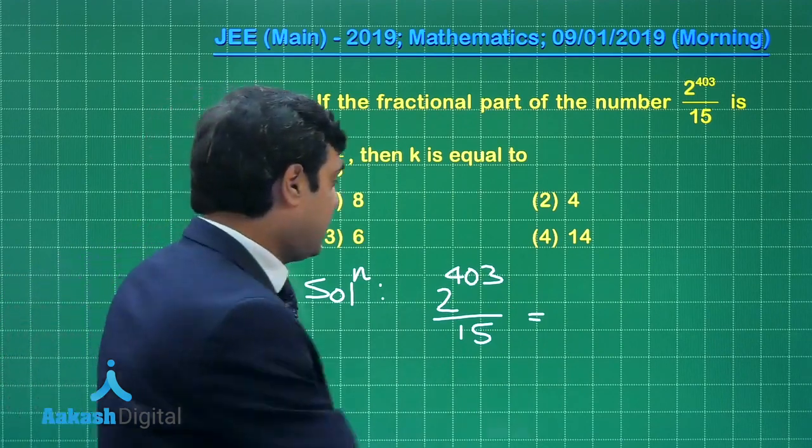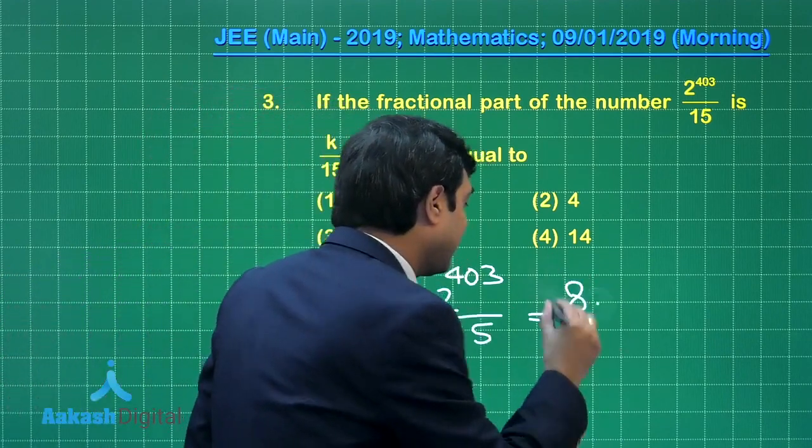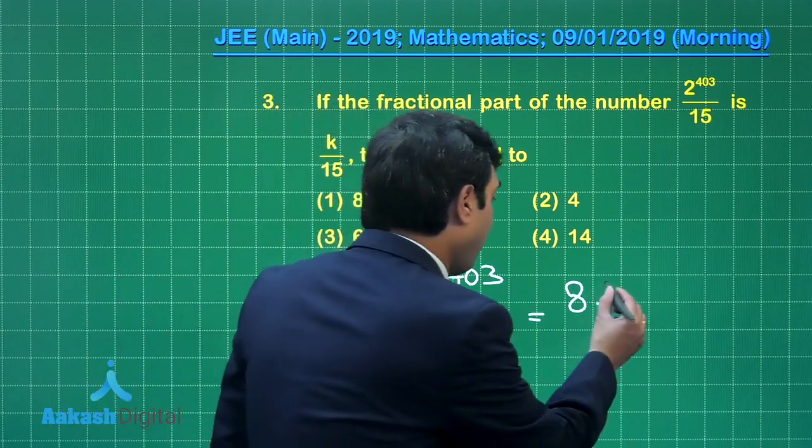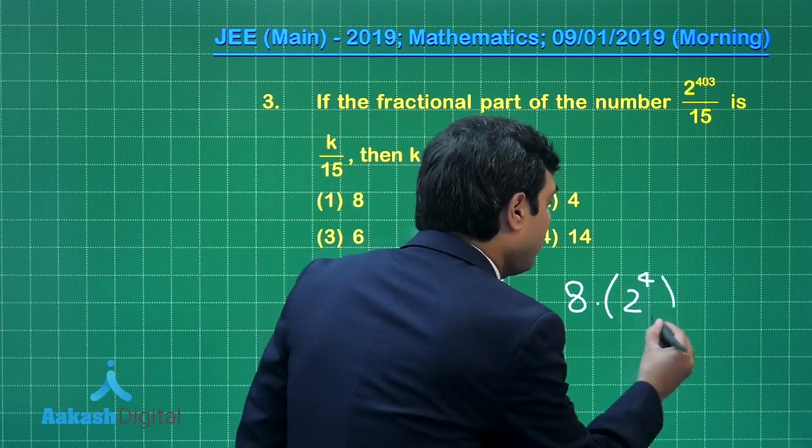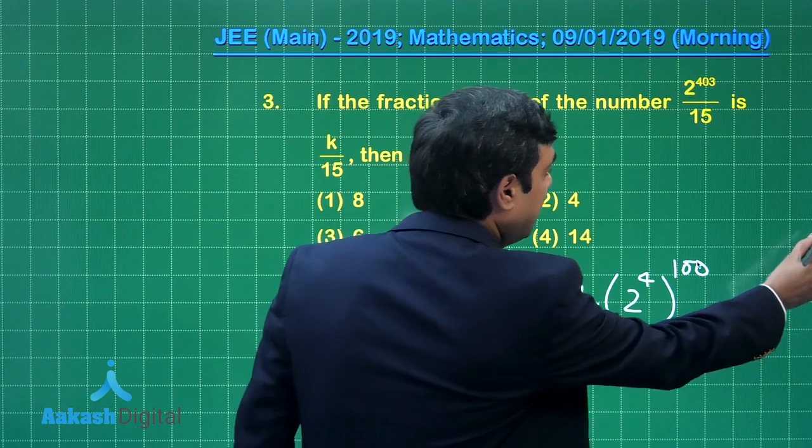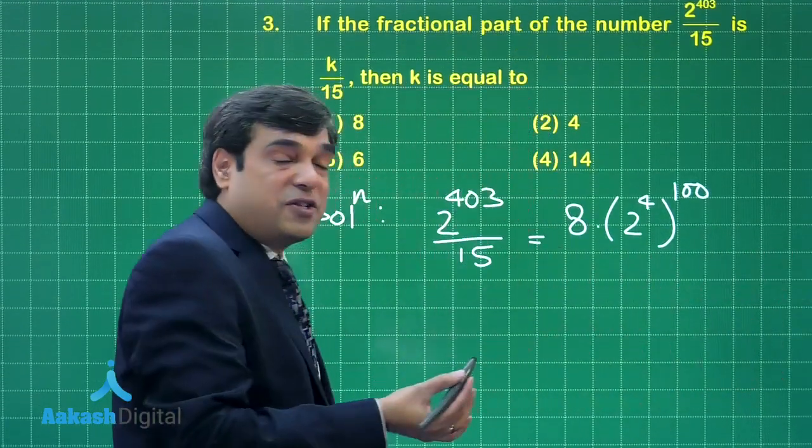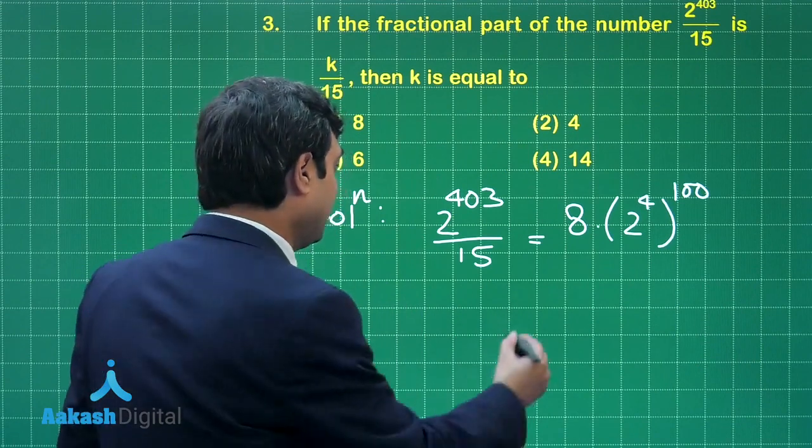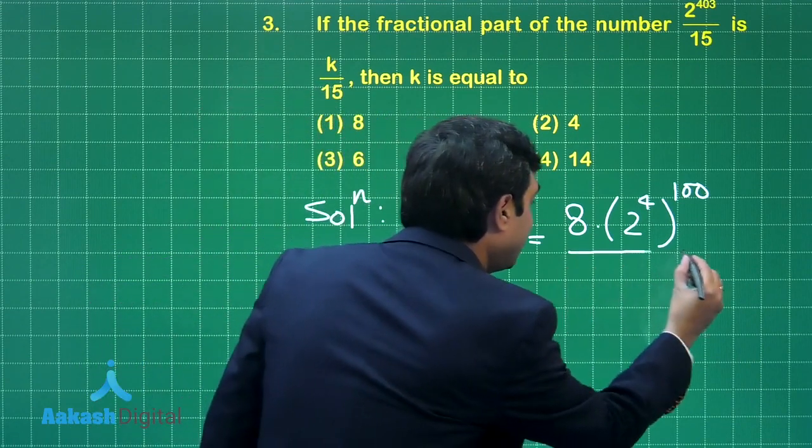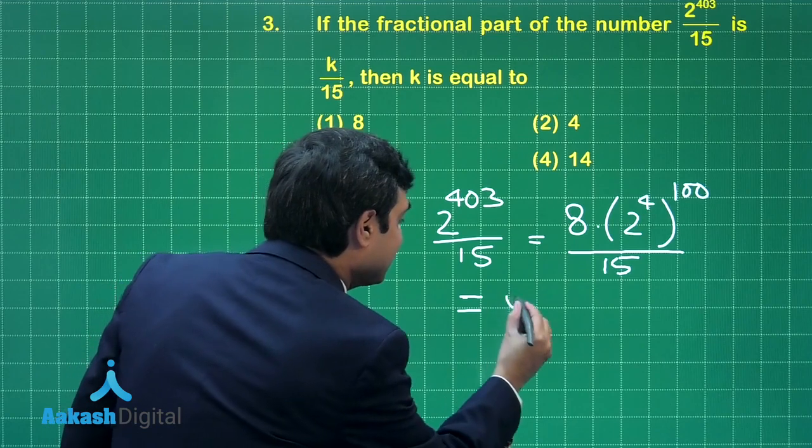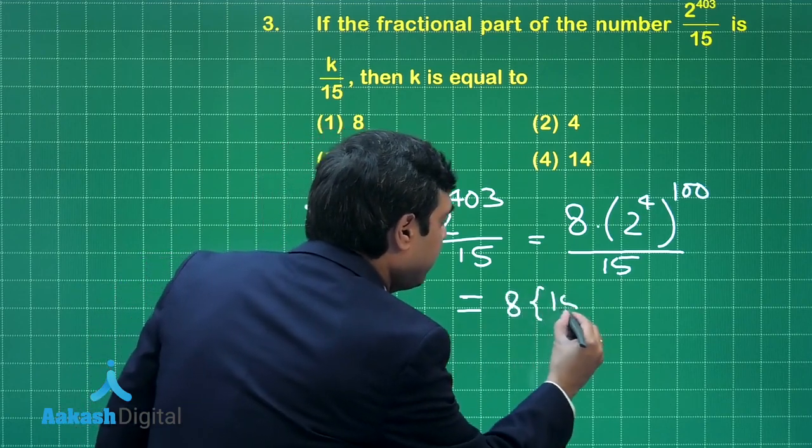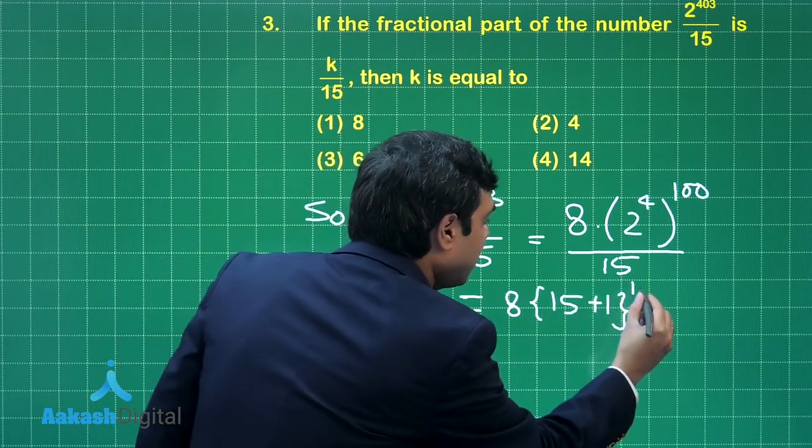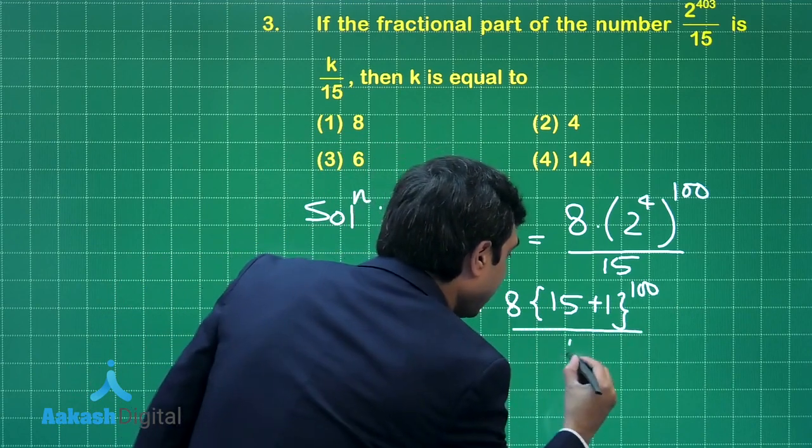2⁴⁰³ can be written as 8 × 2⁴⁰⁰, or 2⁴⁰⁰ = (2⁴)¹⁰⁰. Now this 2⁴, that is 16, can further be written as 15 + 1. So we have this divided by 15.